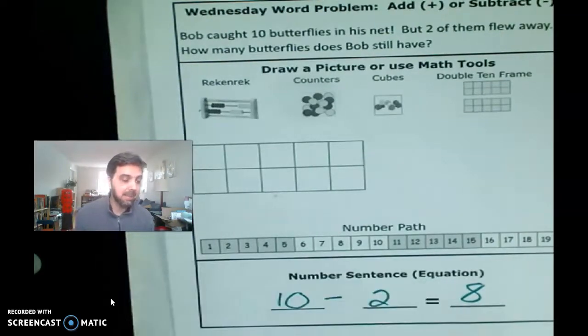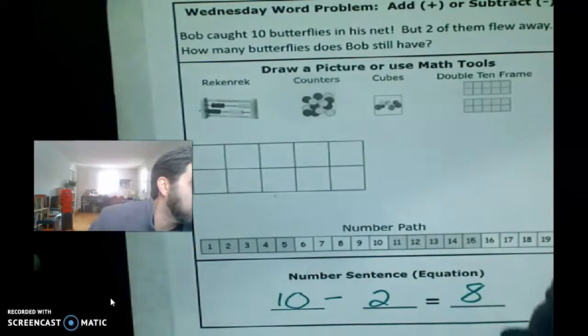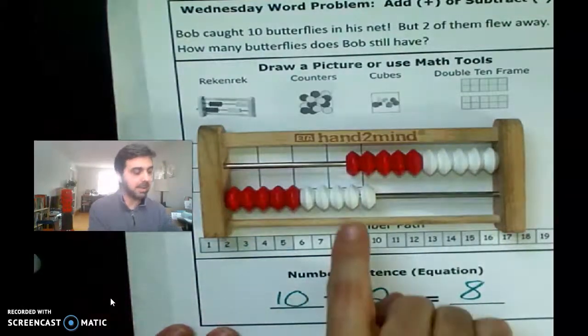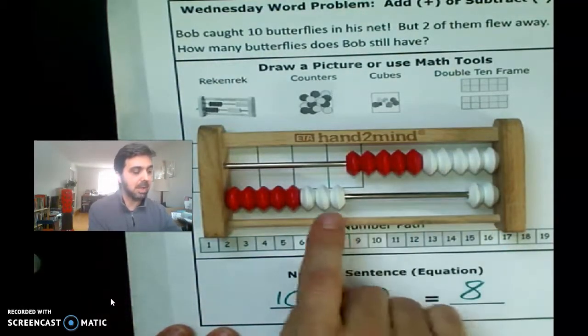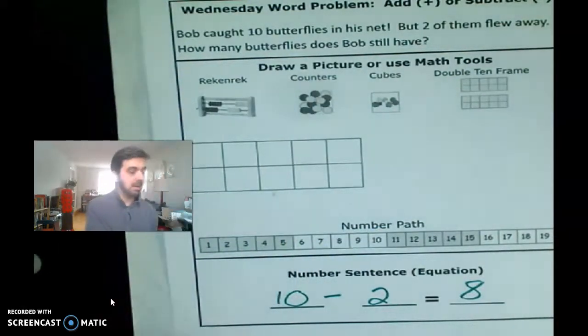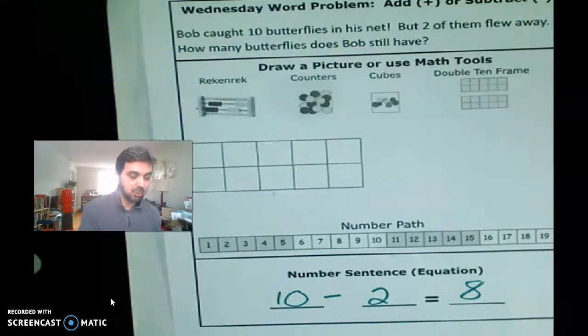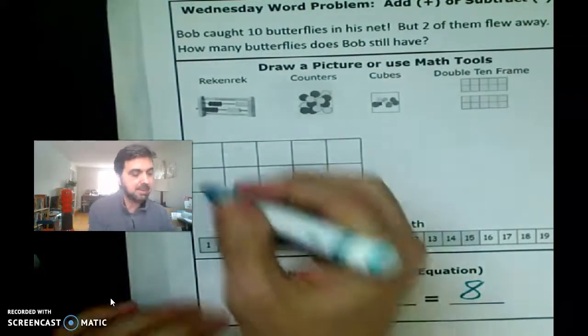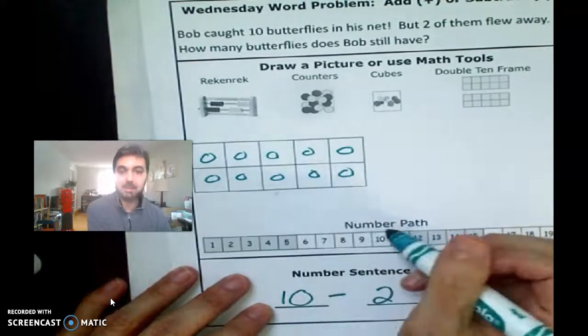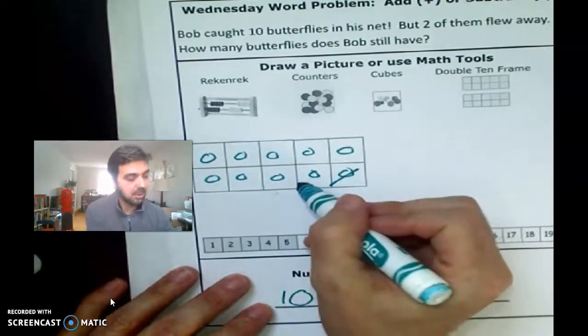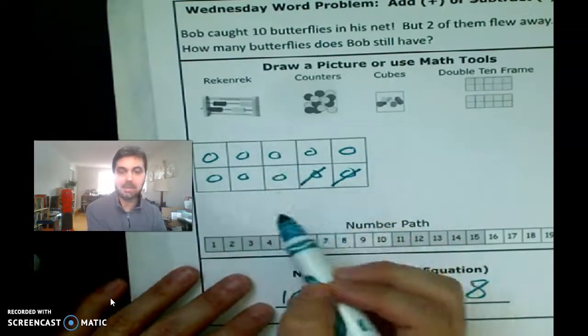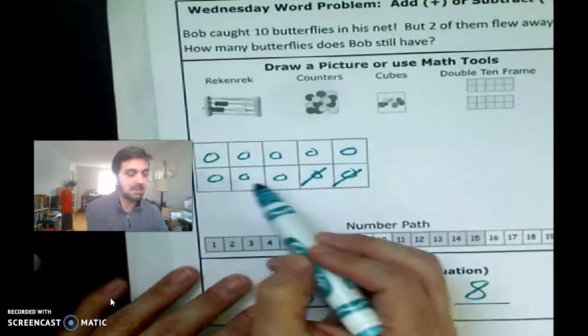So maybe you used a rekenrek to solve this, right? So if we have 10 and we take away two, we're left with five, six, seven, eight. Okay, or maybe you drew a picture right onto the net. Maybe you said, well, there's a butterfly here, there's 10 butterflies, right? And maybe you crossed off two because they flew away and then you saw what was left was three, four, five, six, seven, eight. Or you can see there's five here, six, seven, eight.